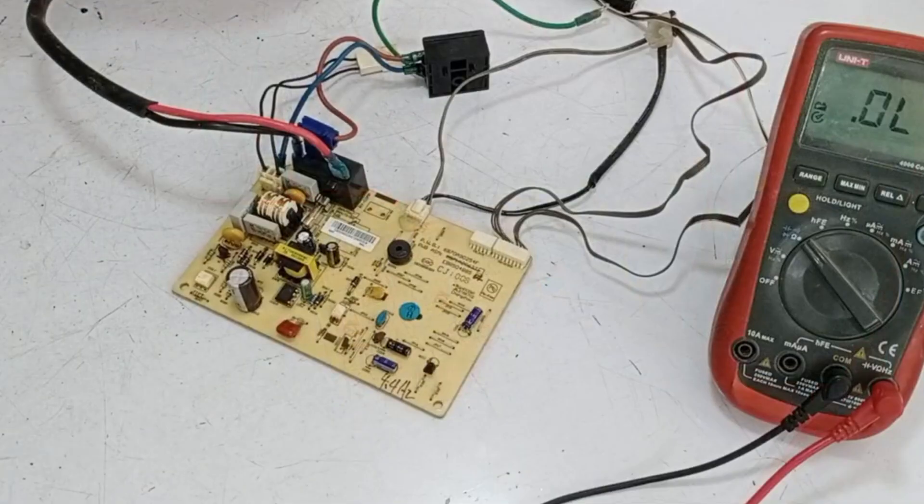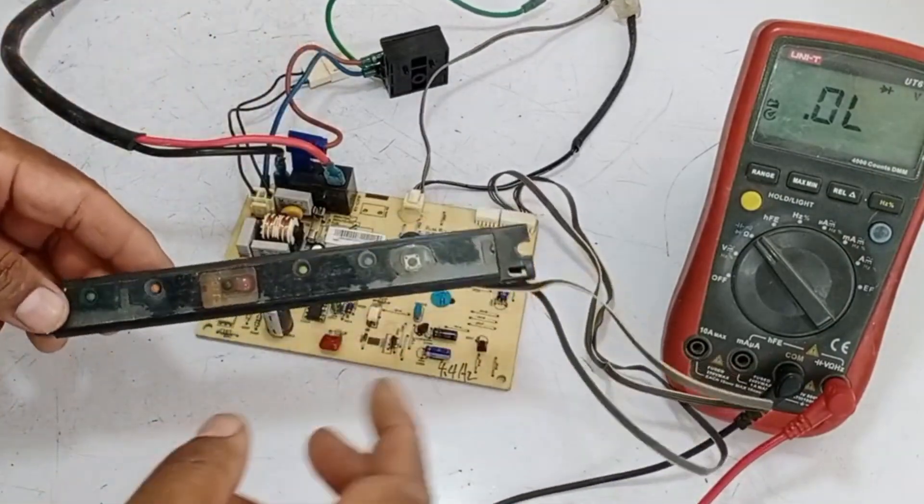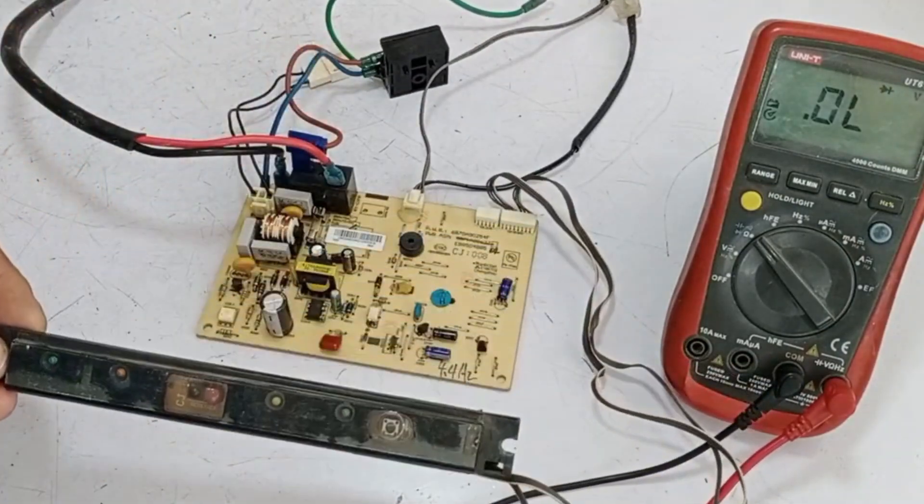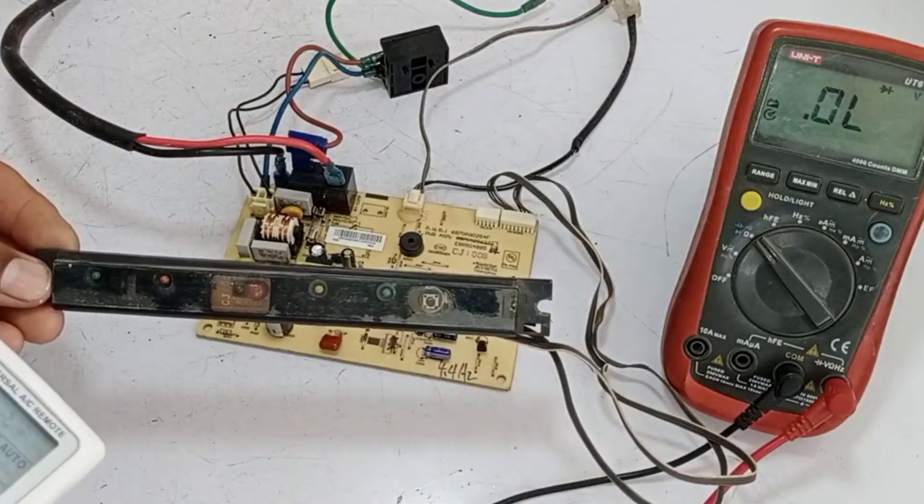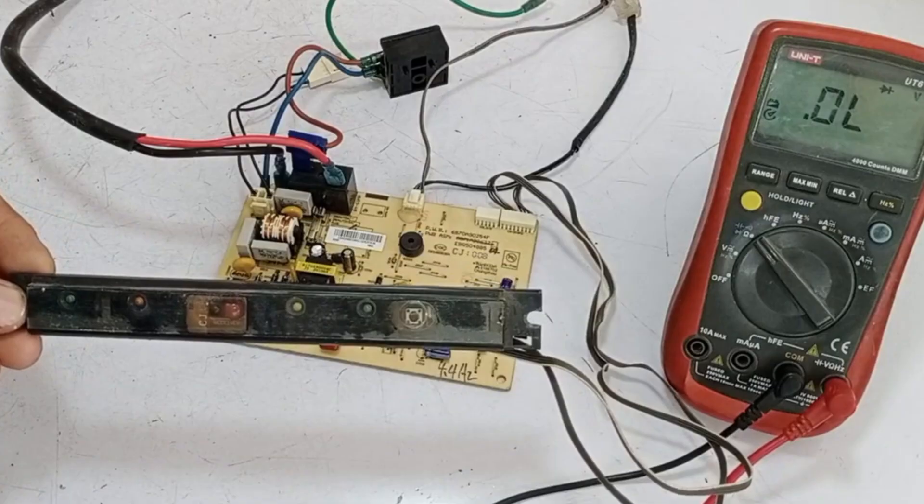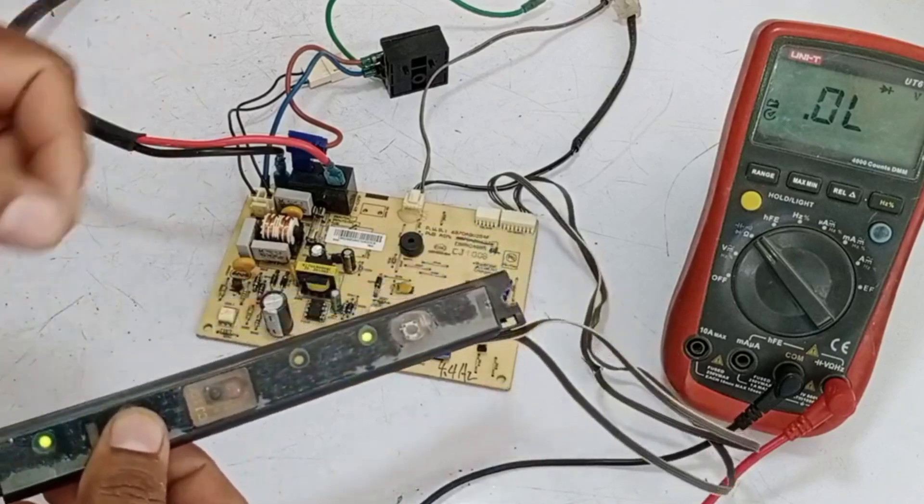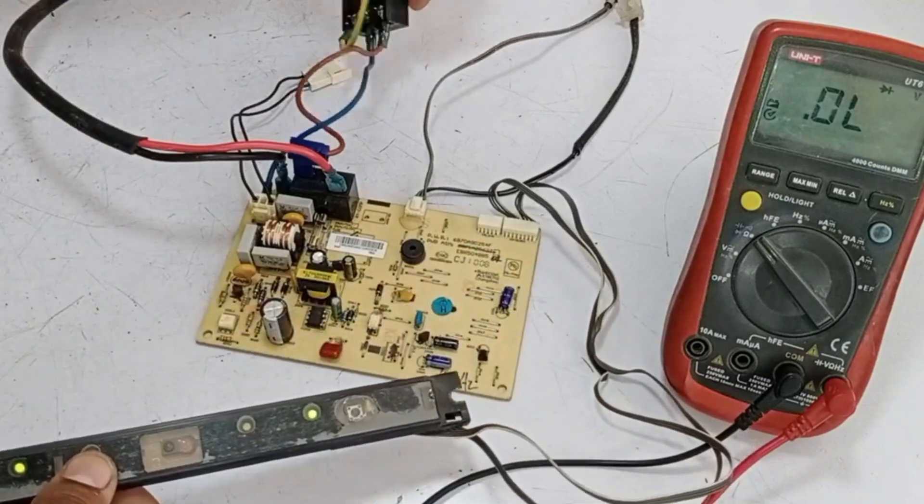And here you can see that it has been fixed. I have also changed the diodes. Now I have supplied electricity to it, and let's see if it turns on. As you can see, the light has turned on, and it has started working. It has also produced its output, so the PCB is completely functional now.